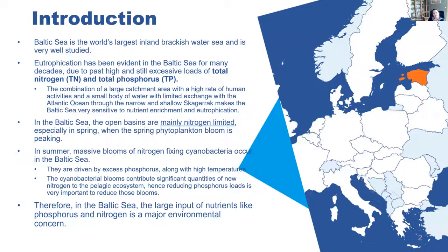Because of its specific conditions, the Baltic Sea is very sensitive to nutrient enrichment and eutrophication, and eutrophication has been evident for decades already. It is very well known that the open basin of the Baltic Sea is nitrogen limited, especially in spring when phytoplankton during the spring bloom consumes all the nitrogen. Because there is still a lot of phosphorus in the water, massive blooms of cyanobacteria develop during summer at high temperatures. Because of these spring and summer blooms, phosphorus and nitrogen loads are a major environmental concern.